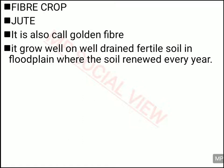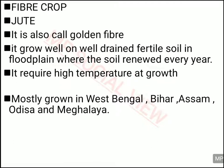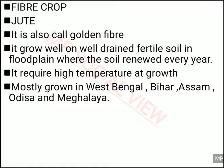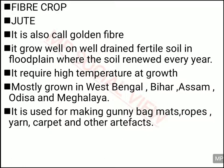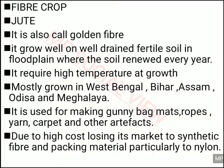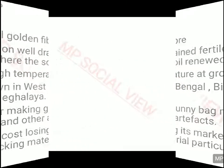Jute is called 'golden fiber' in our country. It is grown in very fertile soil in flood plains, where floods come every year and renew the soil. This fertile, freshly renewed soil is where jute cultivation takes place, requiring high temperature. Jute is grown in West Bengal, Bihar, Assam, Odisha and Meghalaya. It is used for making gunny bags, mats, ropes, yarn, carpet and many other things. Jute was in great demand earlier, but now faces a lot of competition from synthetic fiber like nylon, which is replacing jute as packing material.